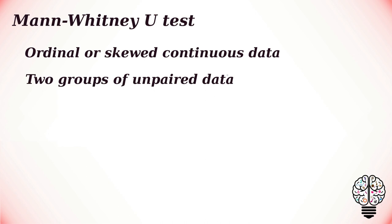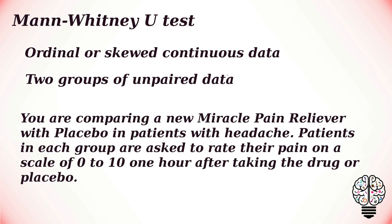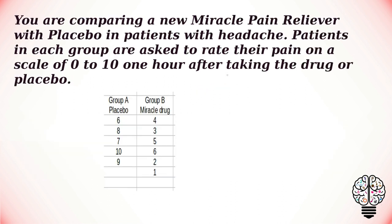Now let us take a look at an example to understand this Mann-Whitney U test. You are comparing a new miracle pain reliever with placebo in patients with headache. Patients in each group are asked to rate their pain on a scale of 0 to 10 one hour after taking the drug or placebo. Group A has the value of 5 patients and group B has the value of 6 patients. This clearly shows that the data are unpaired.